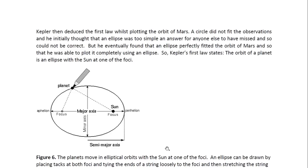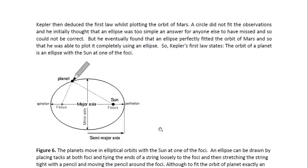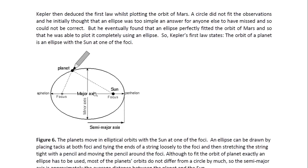Then after that, Kepler deduced the first law whilst plotting the orbit of Mars. A circle did not fit the observations, and he initially thought that an ellipse was too simple an answer for anyone else to have missed, and so could not be correct. But he eventually found that an ellipse perfectly fitted the orbit of Mars, and so that he was able to plot it completely using an ellipse. So Kepler's first law states the orbit of a planet is an ellipse with the sun at one of the foci. And here we see an ellipse, we see the foci, and it has two axes of different lengths. The longer axis is called the major axis, and the shorter axis is called the minor axis.